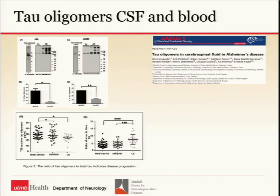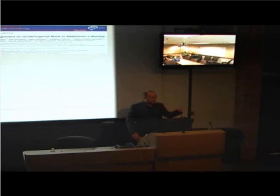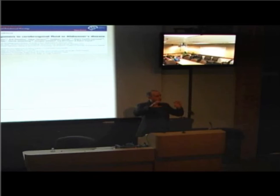On whether CSF tau oligomers are the same as brain tau oligomers: the answer is most likely no — at least the CSF ones appear less potent for spreading. Brad Hammond also has a project looking at different conformations of these aggregates. The data suggests they are different in at least some aspects.